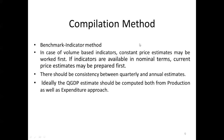In case of volume-based indicators, Constant Price Estimates are worked out first. In case indicators are available in nominal terms, Current Price Estimates may be prepared first. Care should be taken to ensure that the Quarterly and Annual Estimates are consistent with each other. Ideally, the Quarterly Estimates should be computed both from the production as well as the expenditure approaches.